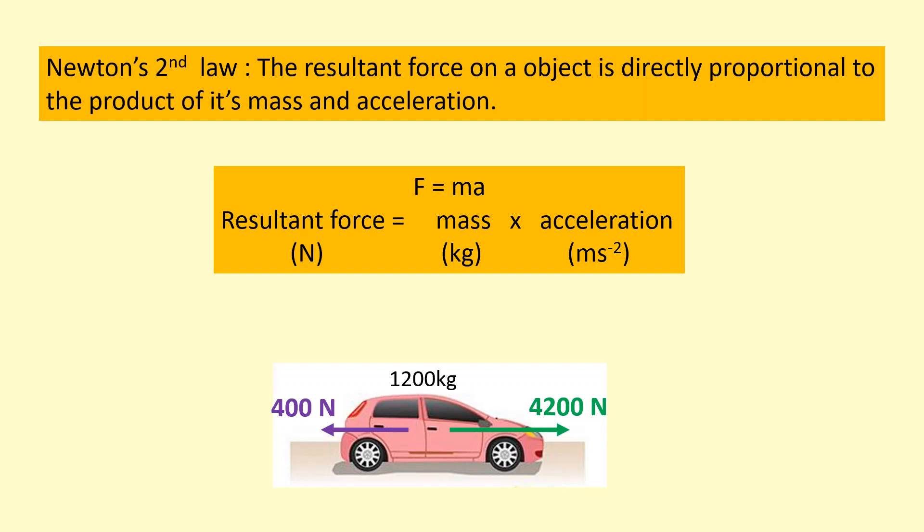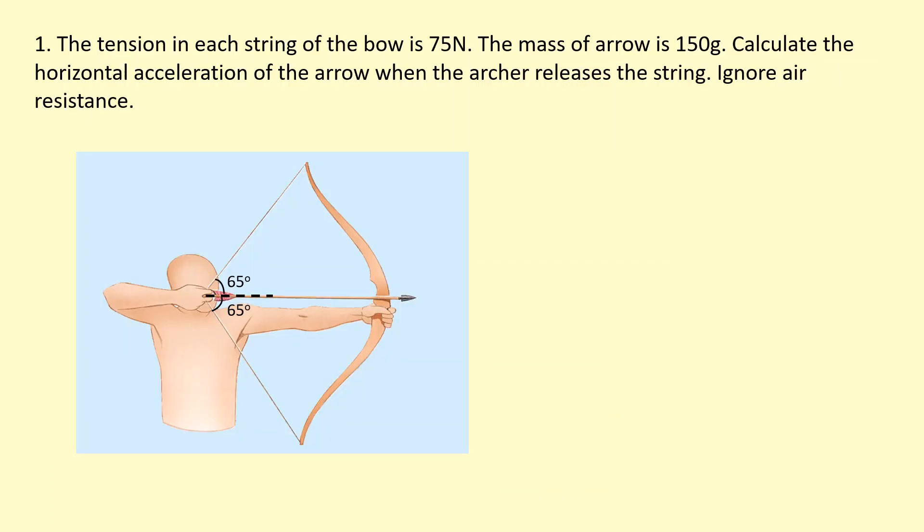Now I want to practice applying Newton's second law, but when the forces aren't necessarily parallel to each other. In this question, the tension in each string of the bow is 75 newtons. The mass of the arrow is 150 grams, so 0.15 kilograms. Calculate the horizontal acceleration of the arrow when the archer releases the string.